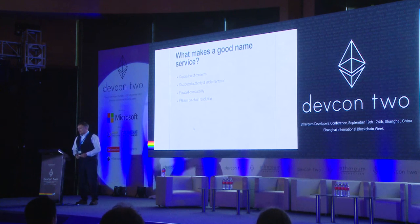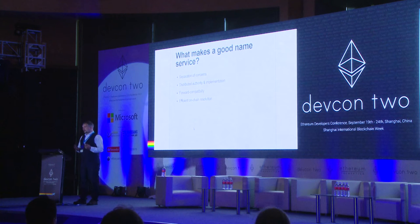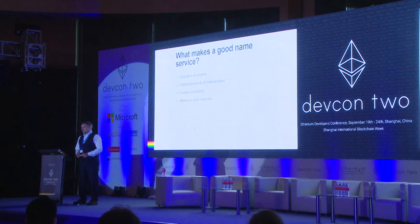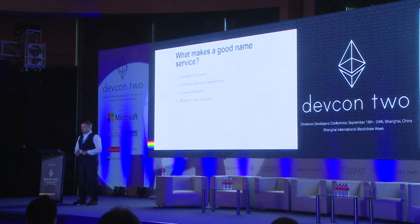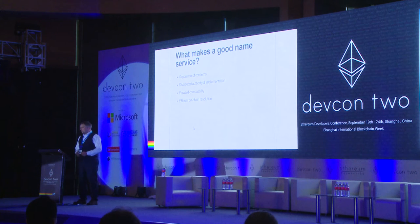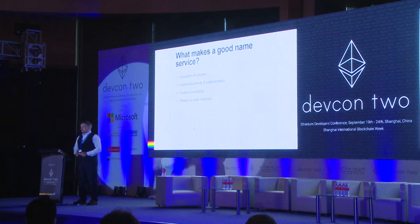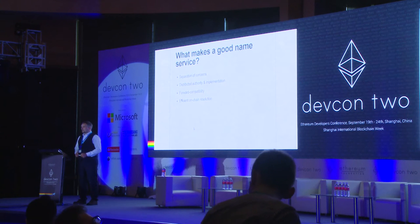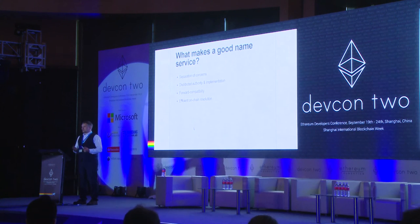So what makes a good name service? Separation of concerns — there are three separate components in a good name service. One is the actual resolution of names, one is the updating and registration of names, and the third is registrars — how you actually get the top level name in the first place. Existing systems conflate those. There's also the matter of distributed authority and implementation, it needs to be forward compatible, and it needs to have efficient on-chain resolution.